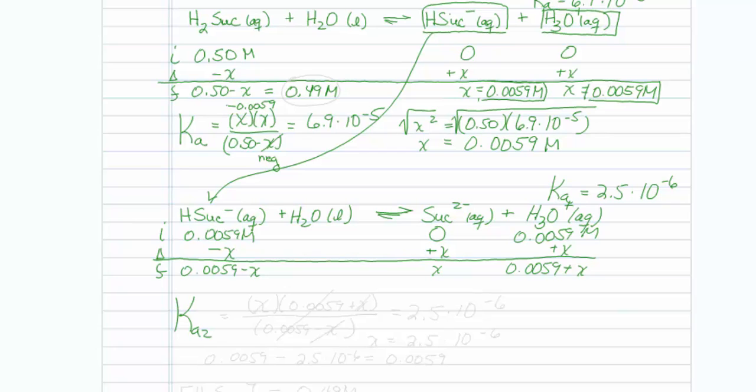So that will be x times 0.0059 plus x over 0.0059 minus x. And that should be equal to the Ka2, which is 2.5 times 10 to the minus 6. Once again, I'm going to make an assumption that x is negligible when it's added or subtracted to a larger value. Then I'm left with x times 0.0059 over 0.0059, which is kind of like x times 1 divided by 1. So when I simplify this, x is equal to 2.5 times 10 to the minus 6.